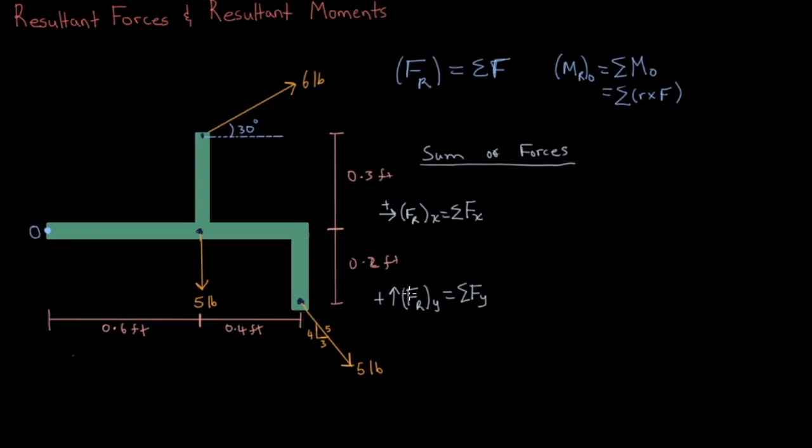Okay, let's look at the x component. The 6lb force at the top has a horizontal component that is equal to 6lb times cos 30. Since it points to the right, it's going to be positive. The 5lb force below it does not have an x component, so let's move to the 5lb force beside that. It has an x component that points to the right, so it will also be positive. Our resultant x component is 8.196 pounds.